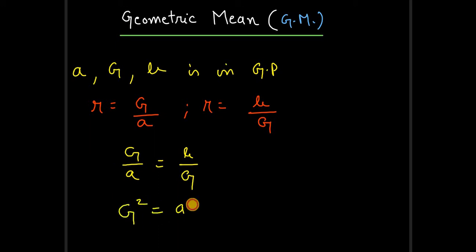Now cross multiplying, we'll get G squared equals ab, and further G equals root ab.